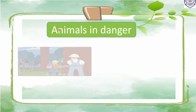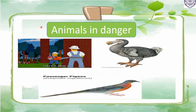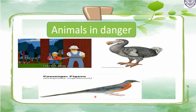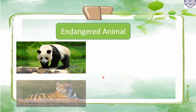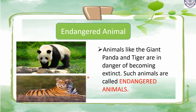Animals in danger: despite a lot of adaptation, the lives of several animals are in danger because of the destructive activities of humans. We are cutting down forests for our needs, taking away the homes and food of animals. Thus many animals are in danger of dying out. Some animals like the dodo and passenger pigeon have already disappeared from the earth — such animals are called extinct animals. Animals like the giant panda and tiger are in danger of becoming extinct — such animals are called endangered animals.